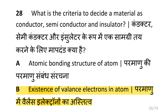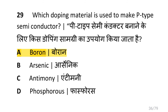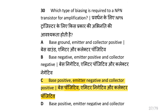What is the criteria to decide a material as conductor, semiconductor and insulator? i.e. the existence of valence electrons in the atom. Which doping material is used to make a P-type semiconductor? i.e. boron.